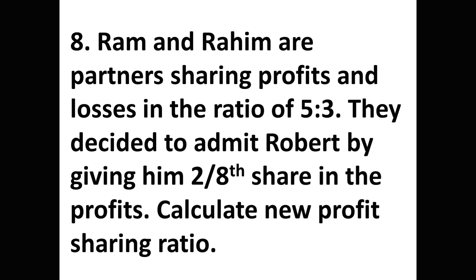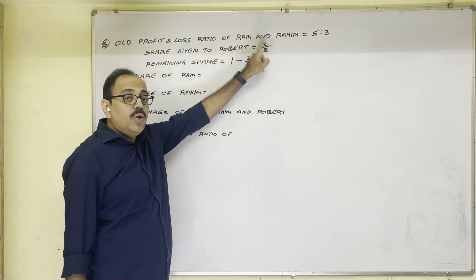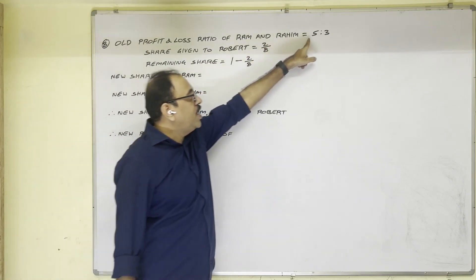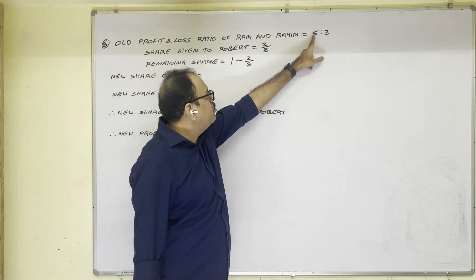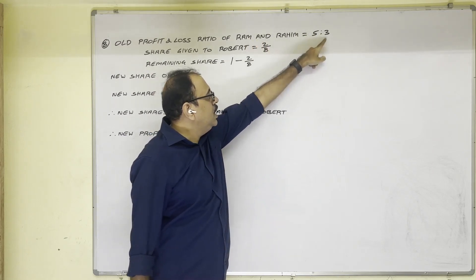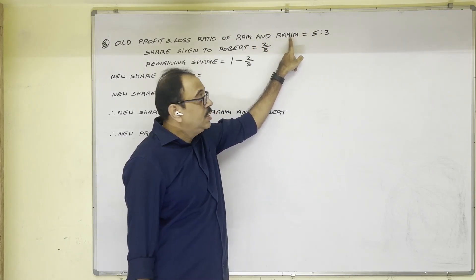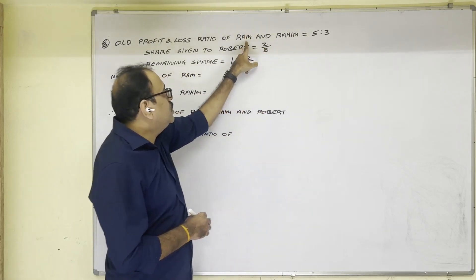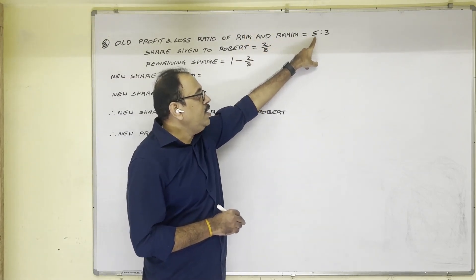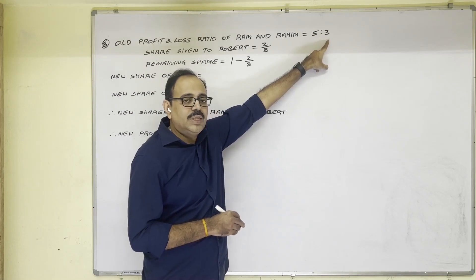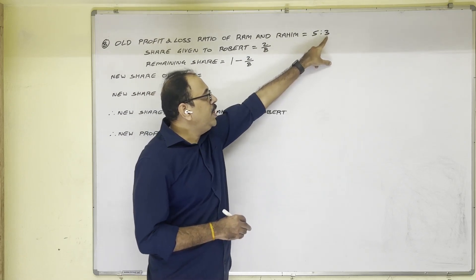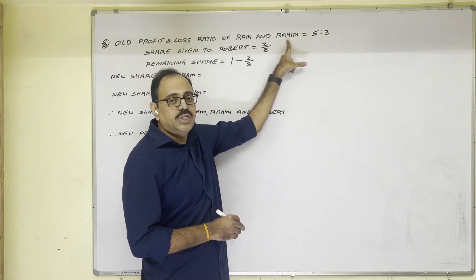Let us see the solution for this. Ram and Rahim are old partners. Their ratio is given in the question, 5 is to 3. 5 number belongs to Ram, 3 number belongs to Rahim. This is old profit and loss ratio. So Ram's share is 5 by, add this to, 5 plus 3 equals 8. So 5/8 is Ram's share, 3/8 is Rahim's share.